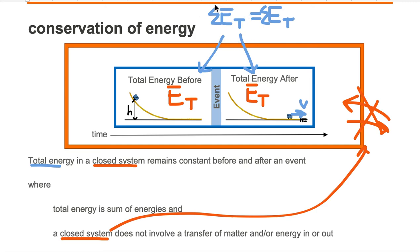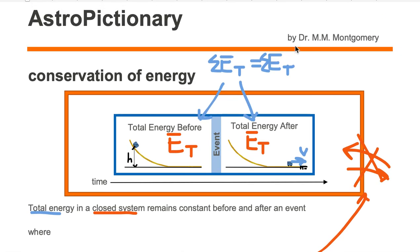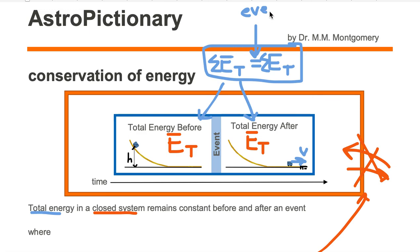However, all the energy before the event and after the event remains the same. The sum of the energies before must equal the sum of the energies after — where the equal sign represents the event. This is what we mean by the conservation of energy: the total energy in a closed system remains constant before and after the event.